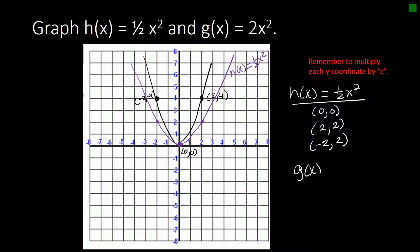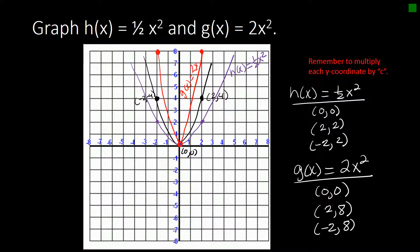Let's look at g of x. It's 2 x squared. Again, the point 0, 0 won't change because 0 times 2 is 0. Here we would have the point 2 comma 8 because 4 times 2 is 8 and negative 2 comma 8. Let's do this one in red. So here 0, 0 is an important point. We're going to go to 2, 8 and negative 2, 8. And this is the graph of g of x equals 2 x squared.